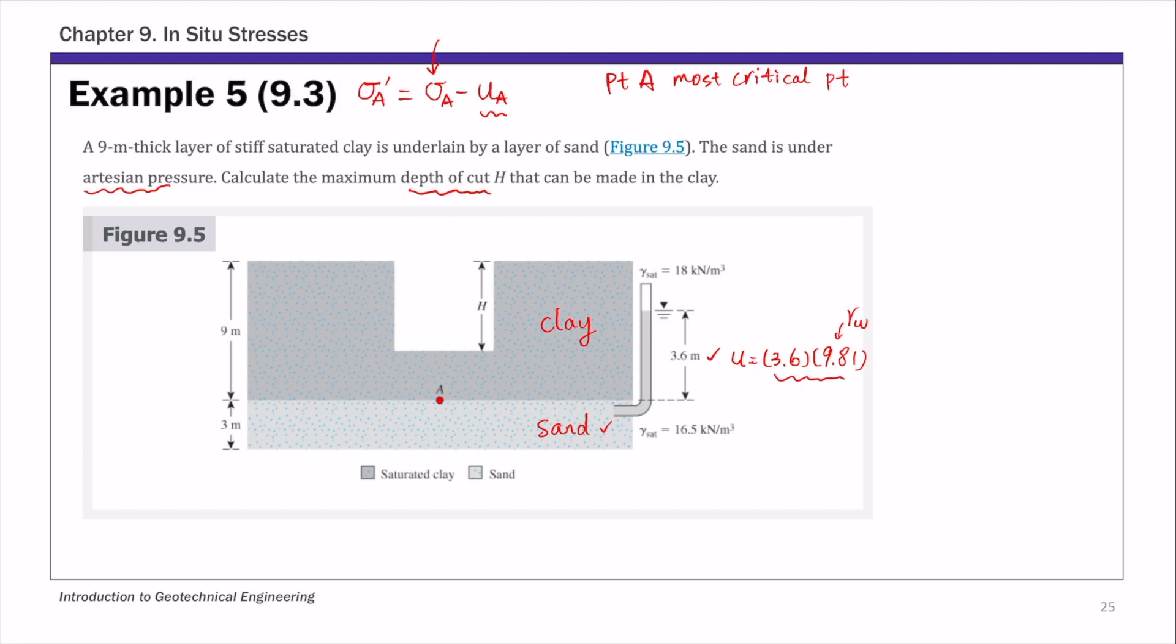if we call the maximum depth of cut H, the total stress sigma A after this cut of depth H is 9 minus H - that's how much soil is left above point A, 9 minus H - times the saturated unit weight of clay. So that's the total stress at point A after that excavation.